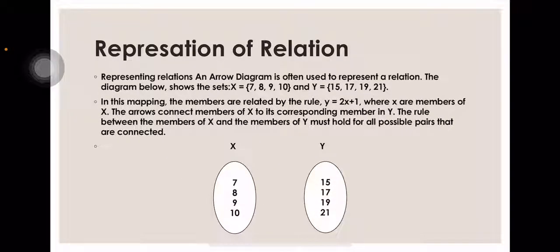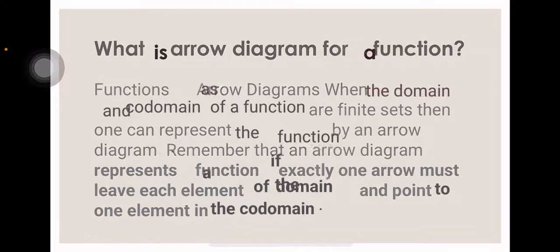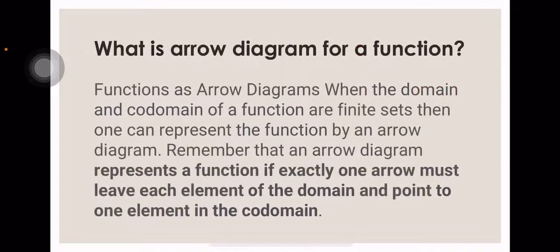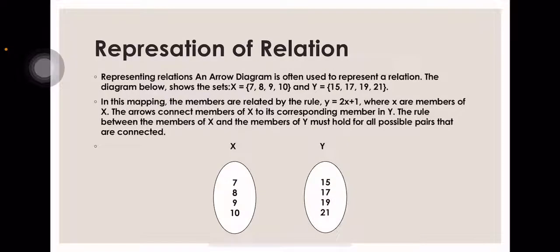Representation of relations using an arrow diagram. The diagram shows the set X = {7, 8, 9, 10} and the set Y = {15, 17, 21}. The members are related by the rule Y = 2x + 1, where X are members of set X. The arrows connect members of X to their corresponding member in Y. The rule between the members of X and Y must hold for all pairs that are connected.